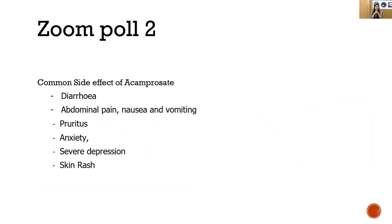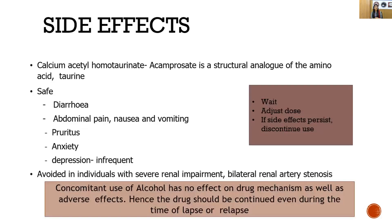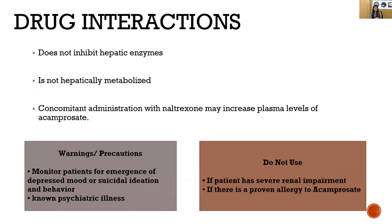Common side effects of acamprosate include diarrhea, abdominal pain, nausea and vomiting, pruritus, anxiety, and skin rash. Severe depression and suicidal ideas are a rare but serious side effect of acamprosate. The case presented by Dr. Deepak involved skin rash — a common side effect due to hypersensitivity, which varies by individual. When a side effect occurs, wait, adjust or lower the dose; if it persists, discontinue the drug and add another anti-craving molecule.